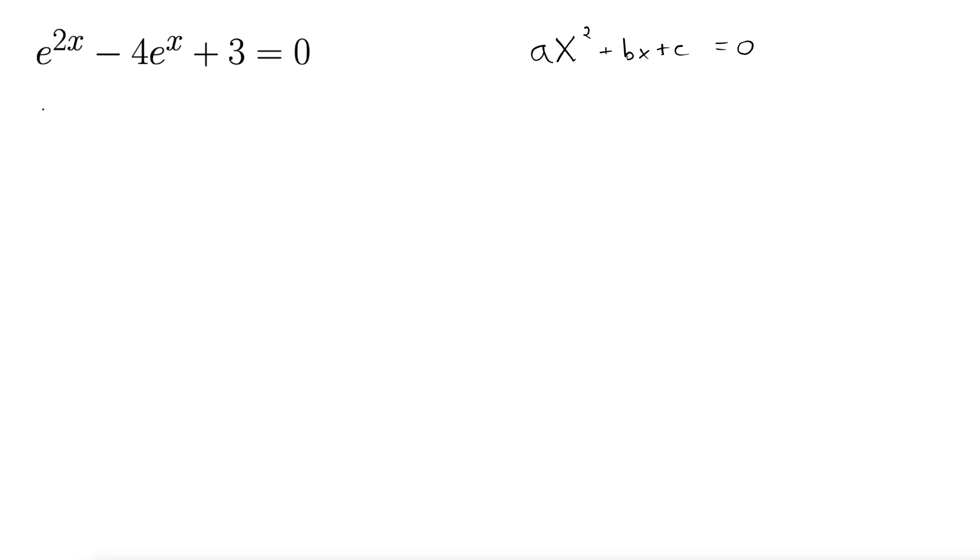Note that we can rewrite this to make it clearer. What if we rewrite this as (e^x)² - 4e^x + 3 = 0? It's the same equation, but now you can see more clearly how this is quadratic in form.